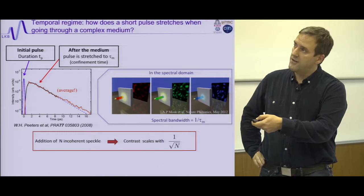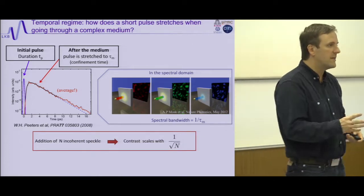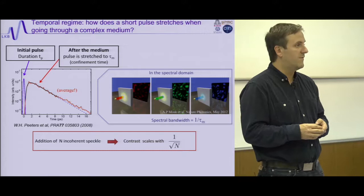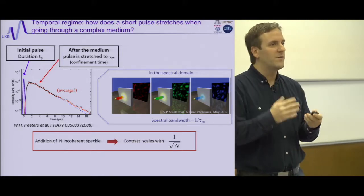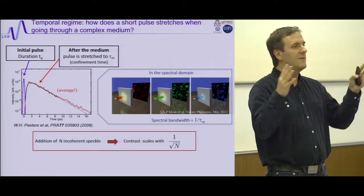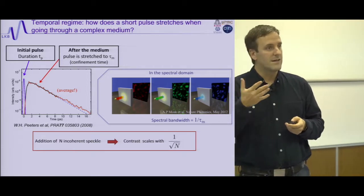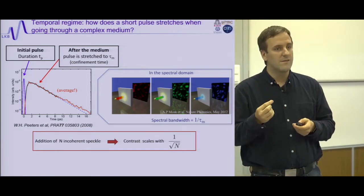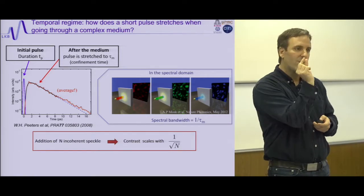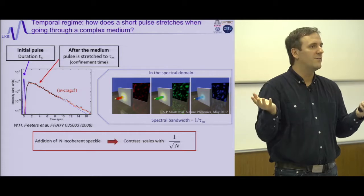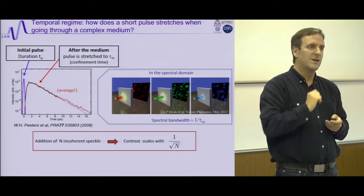Adding incoherent speckles together gives lower contrast. An anecdote for those who have worked with femtosecond lasers: a femtosecond laser is many frequencies that can be locked together or not. An interesting way to check whether your laser is mode-locked is to look at the speckle on the wall. When the laser is not locked, it's narrow in spectrum and you see a nice speckle. As soon as the speckle disappears, you know the laser is mode-locked, because the broad spectrum reduces the speckle contrast.